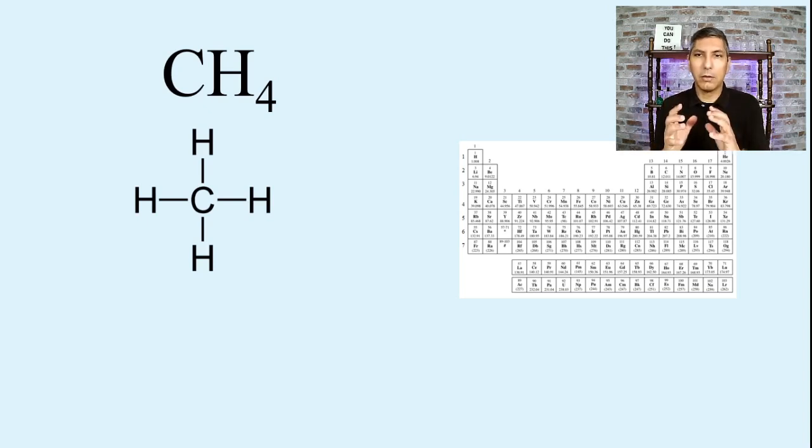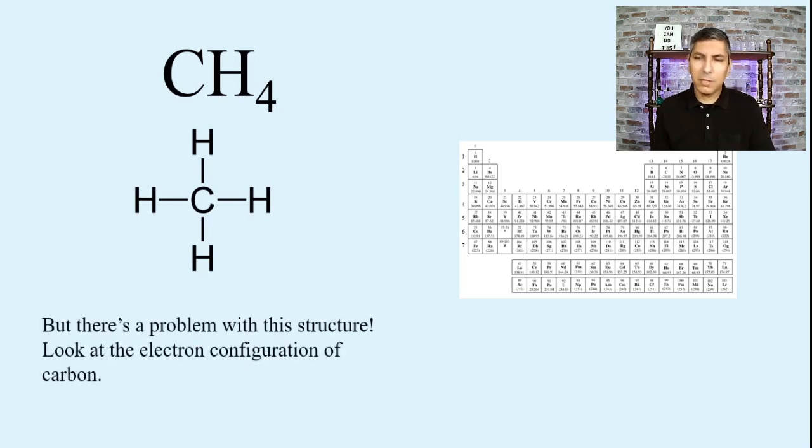We have a carbon atom in the middle, and there are four hydrogen atoms essentially bonded to the carbon atom. And this looks all very good, but some people might look at this and say, well, hang on here, there seems to be a problem with this structure. And that might stem from the fact that if we look at the electron configuration for carbon, it might seem to be a little problematic. Now, what do I mean by that?